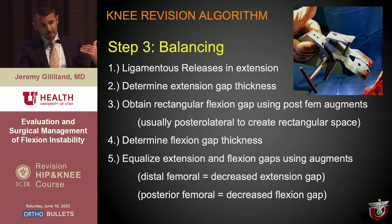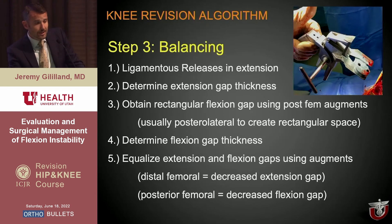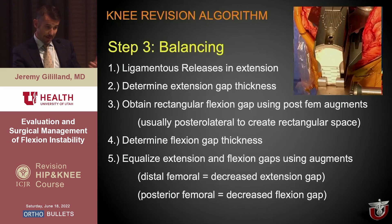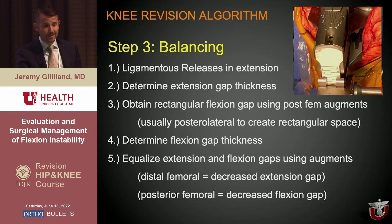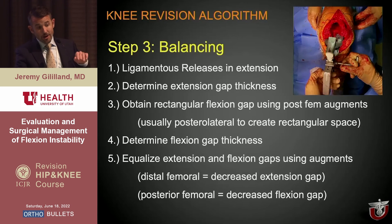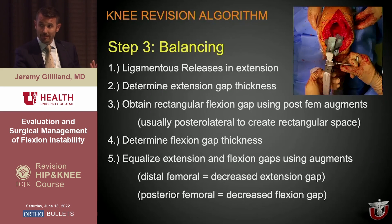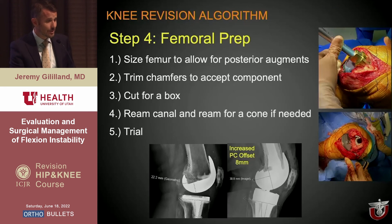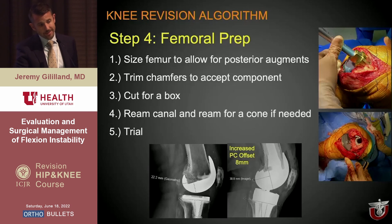On the balancing side, once cuts are made, I balance the extension gap with relative ligamentous releases to get a rectangular gap in extension, then determine the extension gap size using my revision balancer — an old balancer modified with augments that tells me both rectangularity and gap thickness. In the flexion space, I add augments to get rotation right and adjust augments distally and posteriorly to achieve balanced flexion and extension gaps. Then I size the femur for posterior augments as needed, trim chamfers by hand, cut for a box, and ream for the cone and stem before trialing.